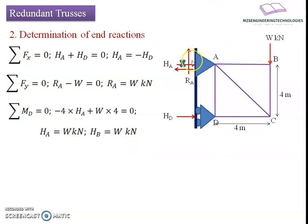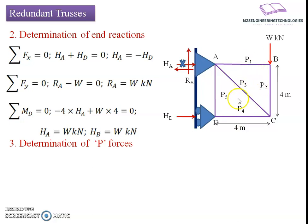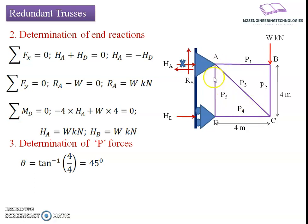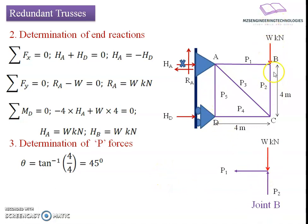Now we proceed with the P-force analysis — the forces carried by the members in the statically admissible case. Let P1, P2, P3, P4, P5 be the forces in the respective members. We also find the inclination of the inclined member with respect to the horizontal: the angle is tan⁻¹(AD/CD) = tan⁻¹(4/4) = 45 degrees. We begin joint-by-joint analysis, starting at joint B.